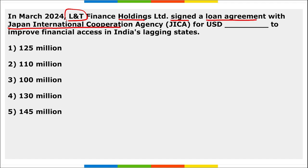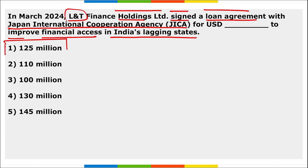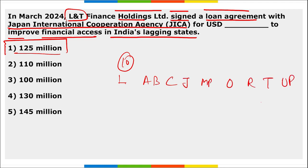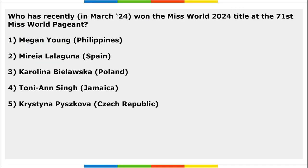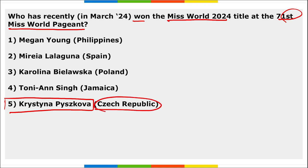In March, L&T Finance Holdings Limited signed a loan agreement with JICA — Japan International Cooperation Agency — for 125 million dollars to improve financial access in India's lagging states. The project was arranged by the Asian Development Bank. The lagging states include 10 states: Assam, Bihar, Chhattisgarh, Jharkhand, Madhya Pradesh, Odisha, Rajasthan, Tripura, Uttar Pradesh, and West Bengal — states with poverty rates above 10 percent.